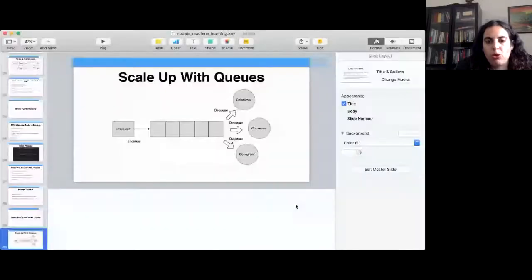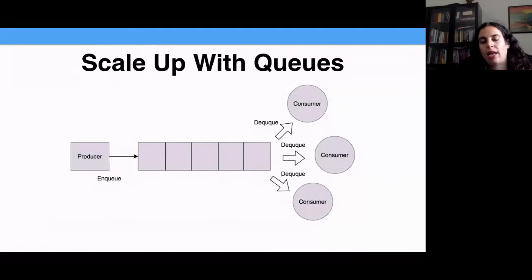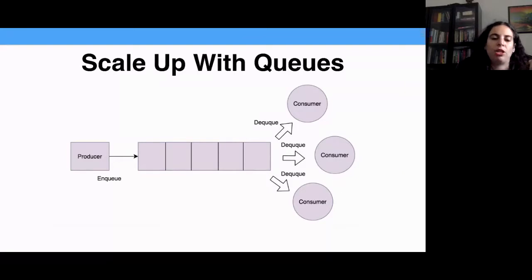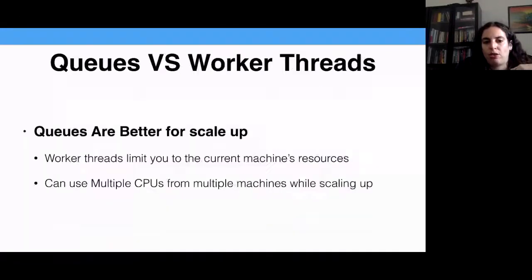I have another implementation of working with worker thread pools — creating a thread pool of worker threads — and you can definitely find it online. I'll also share it on Twitter. Scaling up with queues is also a very good solution — probably the best solution. A producer sends messages to a message queue like RabbitMQ, all consumers process it, and you scale consumers according to the queue length. Worker threads are limited to the current machine resources, but if you work correctly with them in production and efficiently, they show very good results.